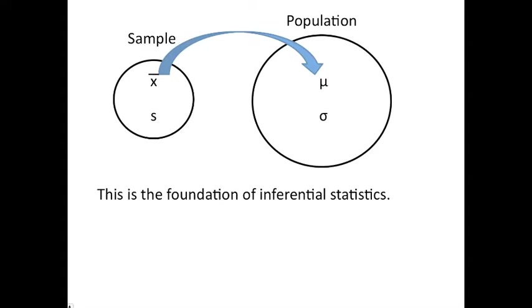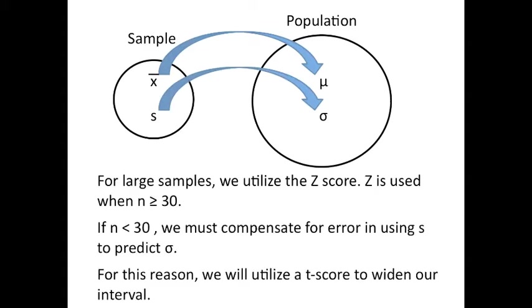Now, the foundation of inferential statistics is if we take a sample and we use that sample to infer about the population. In this picture, we have a sample of x's inferred about a population, and we're using x bar to speculate about mu. When we use a sample to speculate about the population, the real issue is the standard deviation of the sample, and it's been an estimate for sigma. For large samples, we think that s fairly well converges on sigma, and we use a z score.